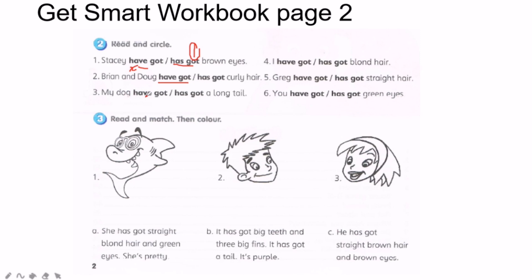Write it yourself. Number three: read and match, then color. You just read and underline, then color it in. For the Get Smart workbook, go to page three, Activity One. You have learned about the numbers just now. Now I want you to match them. For example, number one — 50 dolls. Draw a line from 50 dolls to the correct picture.